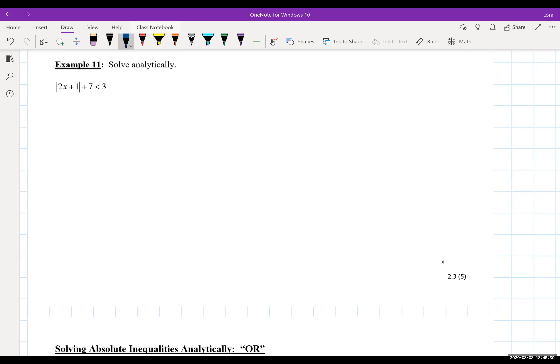So if we would like to solve this absolute inequality analytically, the first thing we always have to do for ourselves is isolate the absolute value bars. So don't forget this step, super important.